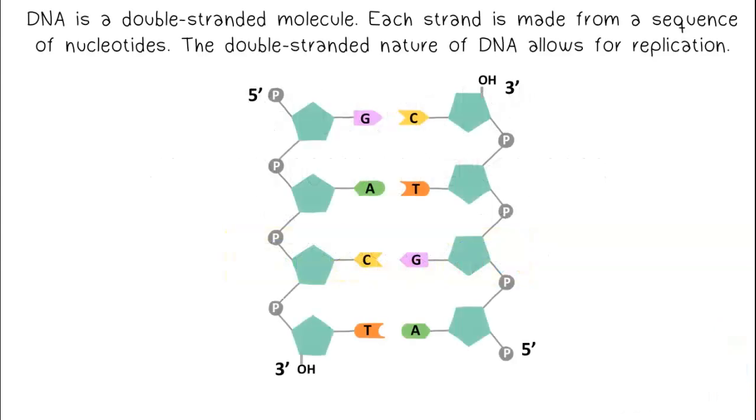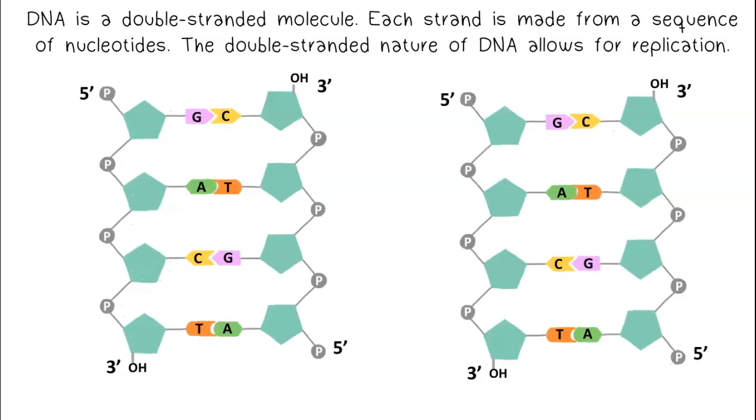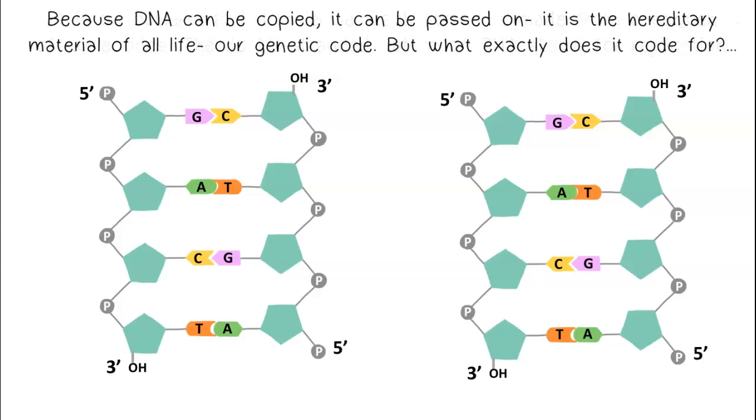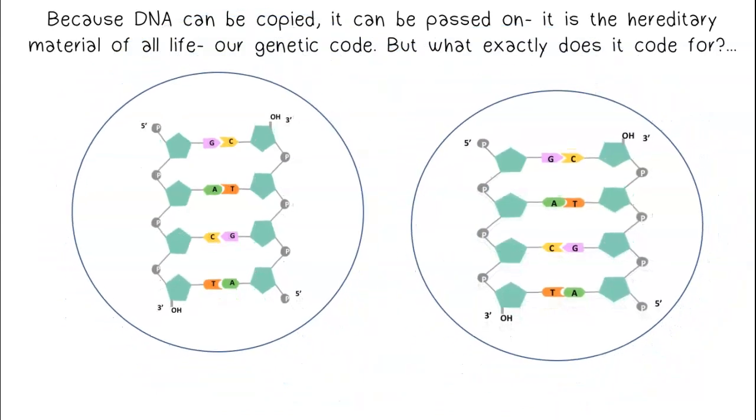DNA is a double-stranded molecule. Each strand is made from a sequence of nucleotides. The double-stranded nature of DNA allows for replication. Because DNA can be copied, it can be passed on. It is the hereditary material of all life, our genetic code. But what exactly does it code for?